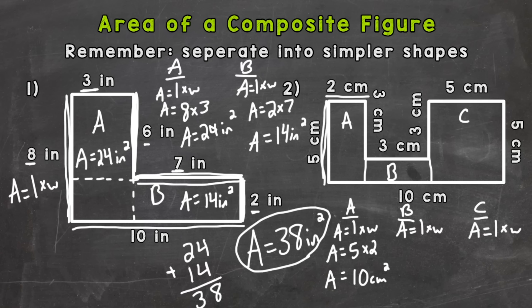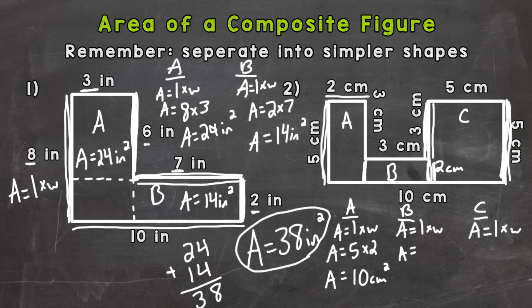For B, we have a length that isn't given, so we need to figure it out. We know the whole shape is 5 centimeters tall. If we have this 3, what does the remaining length need to be to reach that 5 centimeters? It's going to be 2 centimeters — because 3 plus 2 equals the total height of 5 centimeters given on the left and right sides. Sometimes in composite figures you have to figure out measurements that aren't given. So our length is 2 times the width of 3 centimeters, which gives us 6 square centimeters.